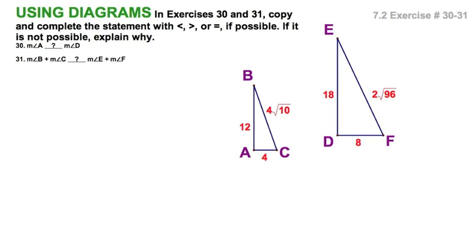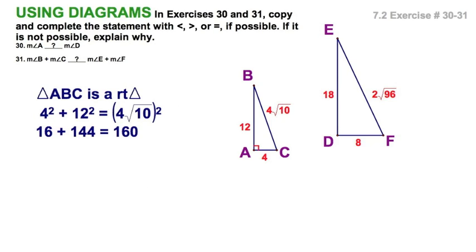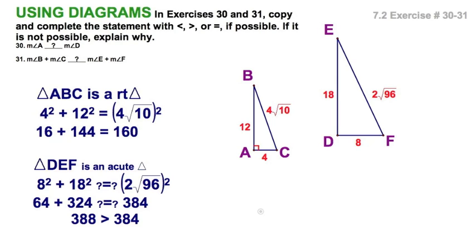Well, we have two triangles here. Let's compare the measures of angle A with the measure of angle D. Well, we'll speed this up. You've got this by now. Well, ABC is clearly a right triangle. According to the converse of the Pythagorean theorem. And let's look at triangle DEF. That's going to be acute. So there it is. You can check that out. Now, if angle A is a right angle, and D is an acute angle, I think we can safely conclude the measure of angle A is greater than the measure of angle D.